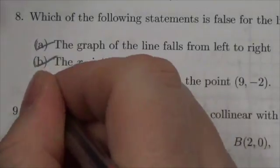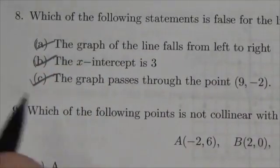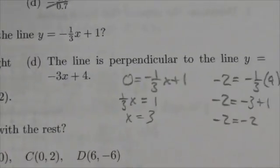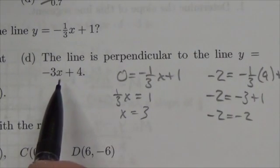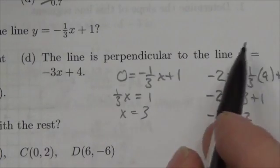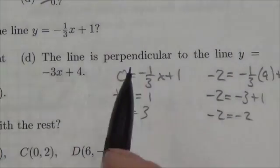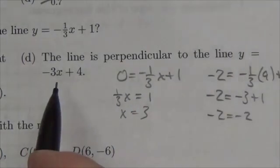Now, by process of elimination, it has to be d, because the first three were correct here. Let's take a quick look. The line is perpendicular to the line negative three x plus four. Now, I apologize for the fact that that wrapped around like that, but anyway, I think it's pretty clear what's going on here.